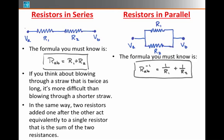For the resistors in parallel, the formula you must know is that one over the equivalent resistance of this part of the circuit, RAB, is equal to one over the first resistor plus one over the second resistor. I've written that as R inverse or R to the minus one power is one over R1 plus one over R2.